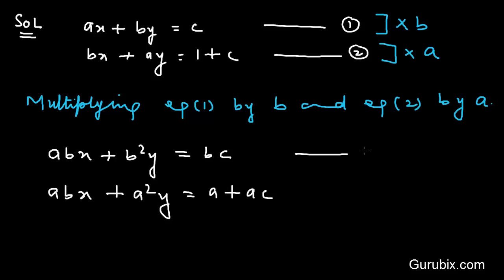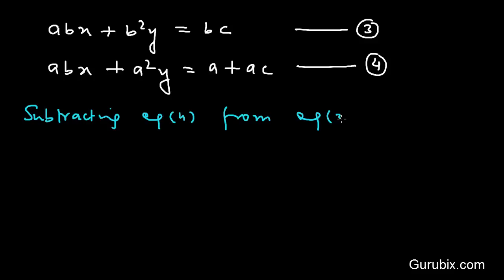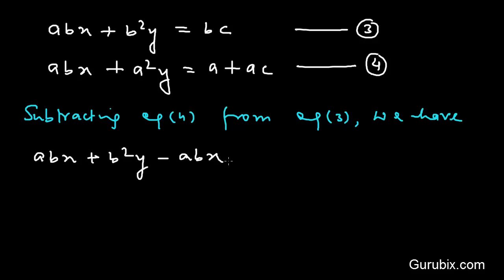Let this be equation number 3 and this be equation number 4. Now we shall subtract equation number 4 from equation number 3. Then we have abx plus b-squared y minus abx minus a-squared y equals bc minus a minus ac.